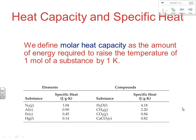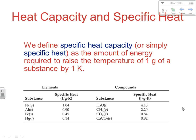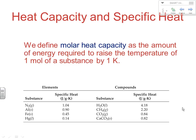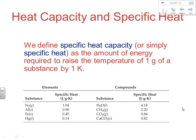Molar heat capacity is a characteristic property of different substances — different elements and substances will have different molar heat capacities. Specific heat looks at the amount of energy required to raise the temperature of one gram of a substance by 1 K. So the difference between molar heat and specific heat: molar heat is raising one mole of a substance by 1 Kelvin, while specific heat is raising one gram of it by 1 Kelvin.